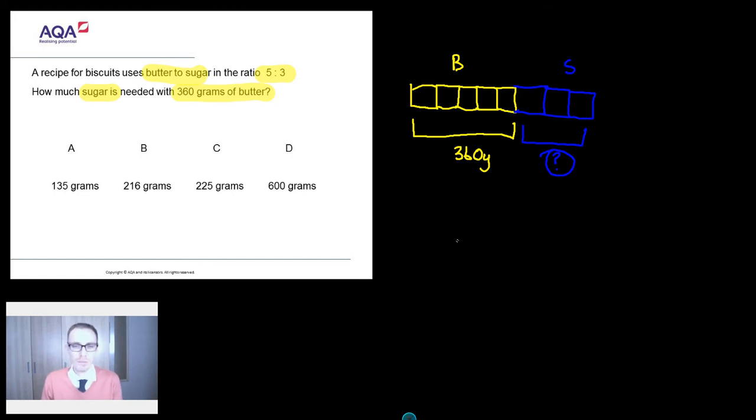OK, and when I get my answer, it's going to help me judge whether it's a sensible answer or not a sensible answer. So how am I going to work it out? So those 5 bits of butter or 5 parts of butter are going to equal 360 grams. So let's work out what each one of those parts is. So I've got 360 and I've got to divide it by 5.